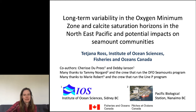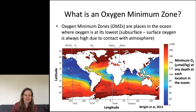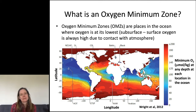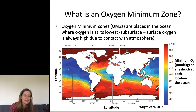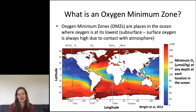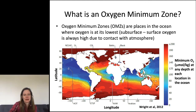I'm going to start by backing up — what's an oxygen minimum zone? It's really important in my piece of the ocean because I study the Northeast Pacific, specifically the deep ocean off British Columbia. An oxygen minimum zone is a place in the ocean where the oxygen is at its lowest. We're talking subsurface here, because surface oxygen is always high due to contact with the atmosphere. This figure from a 2012 paper shows the minimum oxygen at any depth — these are subsurface oxygen minimum zones.